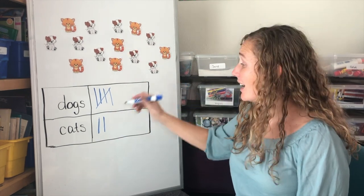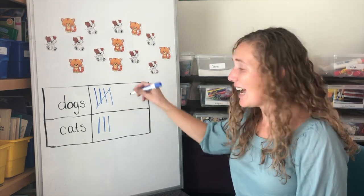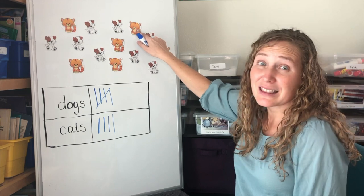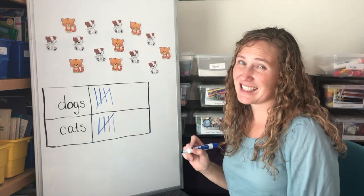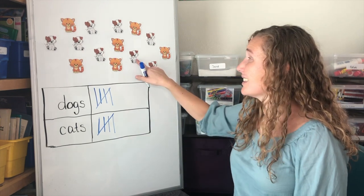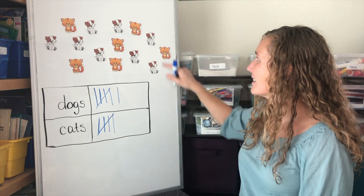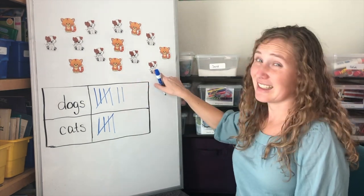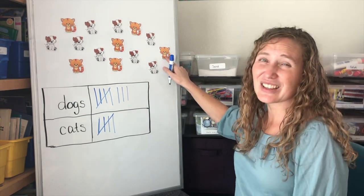Now we've counted another cat and another cat. Back up at the top, this is our fifth cat. Let's make a slash across. Another dog. That's six. Another dog, another dog, and another cat.